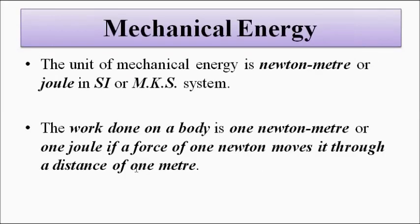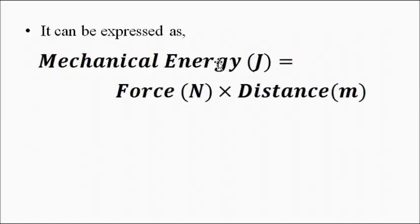The unit of mechanical energy is newton-meter or joule in the SI or MKS system. One joule, or one newton-meter, is defined as the work done on a body if a force of one newton moves the body through a distance of one meter. So mechanical energy is force times distance: one joule equals one newton times one meter.